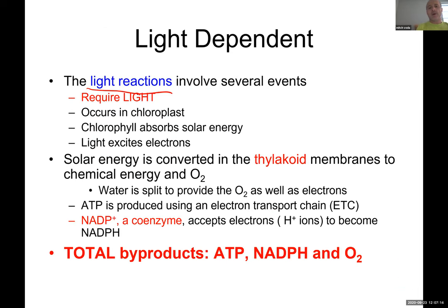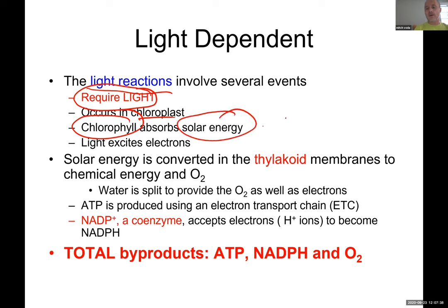Light reactions require light, occur in the chloroplast, and require chlorophyll — chlorophyll is the one that absorbs solar energy. How do plants turn energy from the sun into ATP? Chlorophyll absorbs the solar energy, and that energy has to be turned into ATP. We can't do that — that's why we can't produce energy directly from the sun when we go outside. It involves a little physics and chemistry.